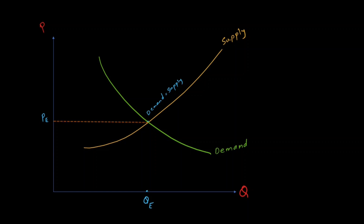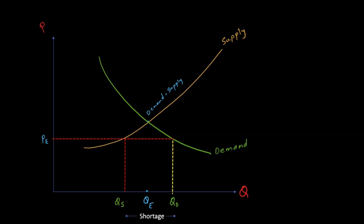Pushing the price down on the graph shows that quantity supplied has decreased and quantity demanded has increased, creating a shortage. When there is a shortage, there will always be some buyers willing to pay a higher price to secure more quantity of that good, depending on the nature of the good. As a result, the price slowly starts to increase. When the price increases, sellers start selling more, supply increases, and the shortage decreases.